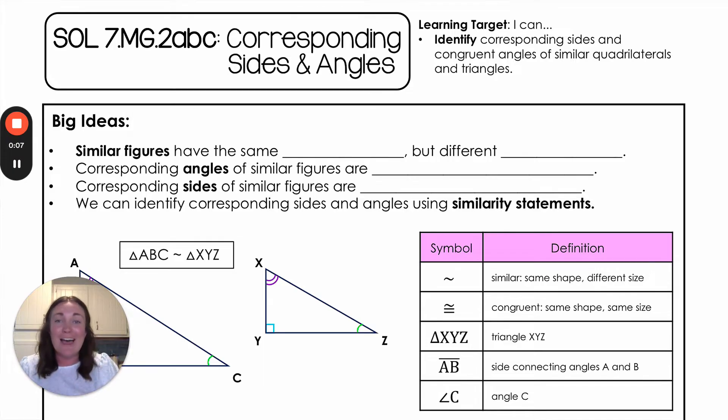To start off with, we have a lot of vocab to cover. The first being, what is a similar figure? Similar figures have the same shape but a different size. I always tell my students it's kind of like you're zooming in or zooming out on a shape. If you have a triangle and you zoom in it's gonna get bigger. If you zoom out it's gonna get smaller. But we're keeping it that same exact shape and we're just shrinking it or enlarging it.